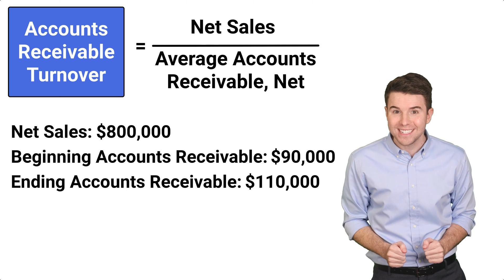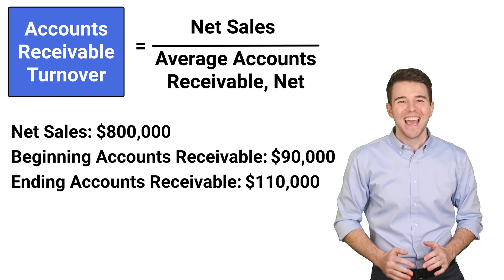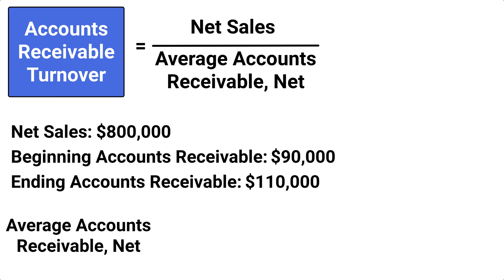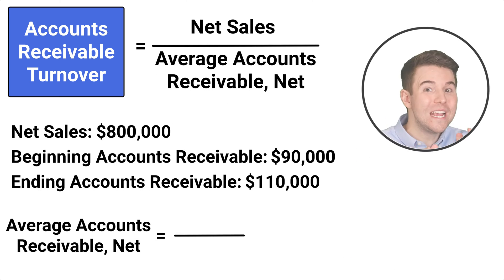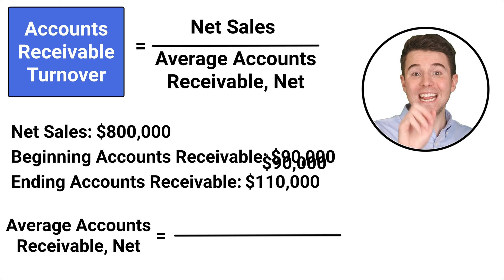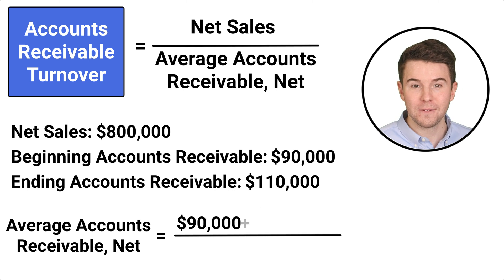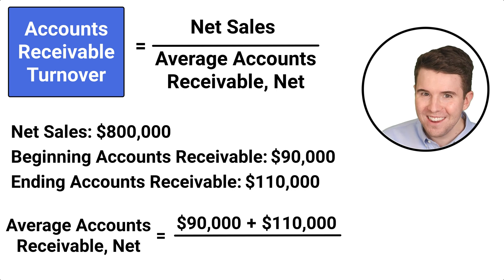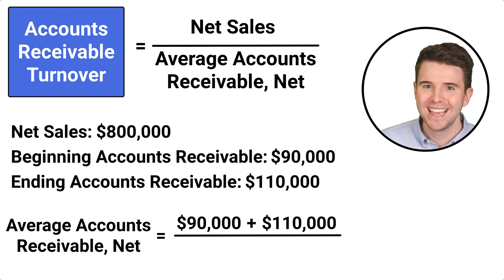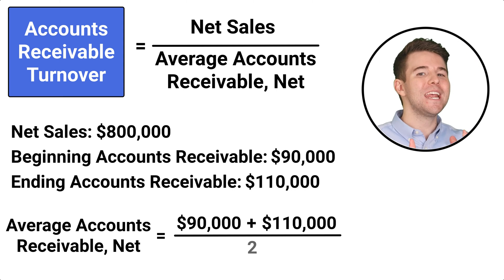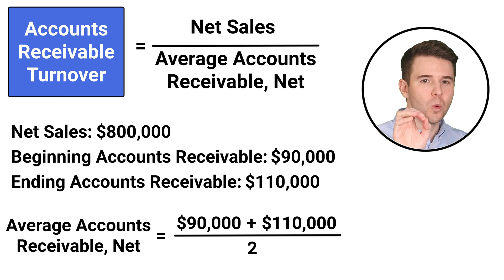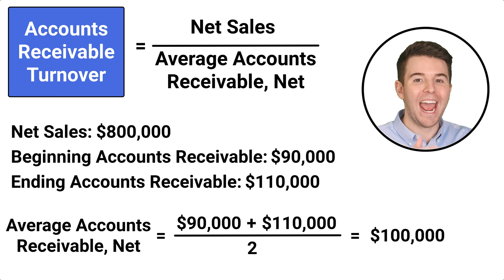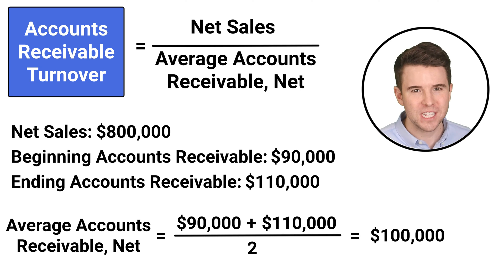To calculate the average accounts receivable, we take $90,000 plus $110,000 and divide it by two to get $100,000 average accounts receivable.